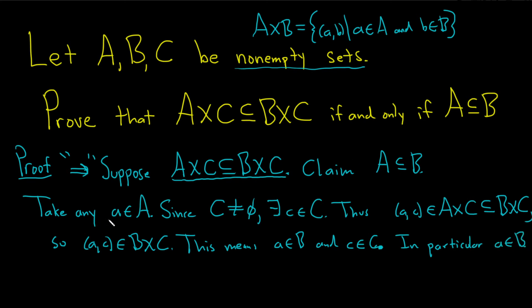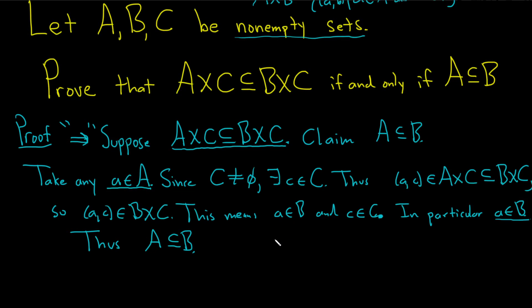And that's how you do it. We started by taking an element in A and showing it's in B. So thus A is a subset of B. So that proves that direction there. Let's do the other direction.